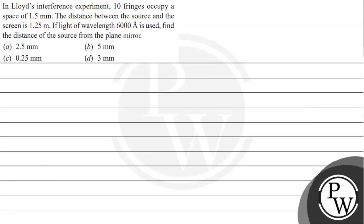Hello, let's read the event question. The question says: in Lloyd's interference experiment, 10 fringes occupy a space of 1.5 mm. The distance between the source and the screen is 1.25 meter. If the light of wavelength 6000 angstrom is used, we need to find the distance of the source from the plane mirror. Option A: 2.5 mm. Option B: 5 mm. Option C: 0.25 mm. Option D: 3 mm.